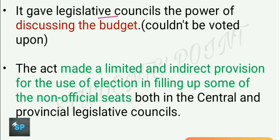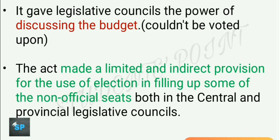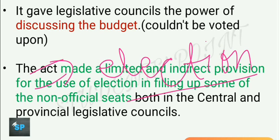The Indian Councils Act of 1892 also gave legislative councils the power of discussing the budget, however the budget could not be voted upon — only discussed. At present all MPs have the power to vote on the budget. This act also made limited and indirect provisions for the use of elections in filling up some non-official seats in both central and provincial legislative councils. Importantly, the term 'election' was not used anywhere in this act, but it was the first act to take a step toward introducing elections.